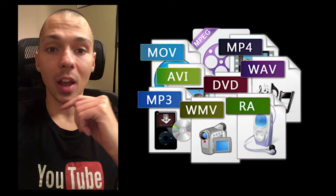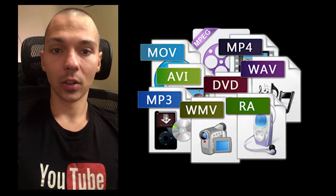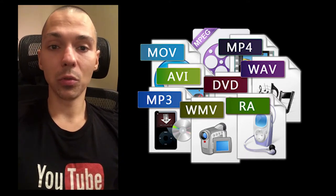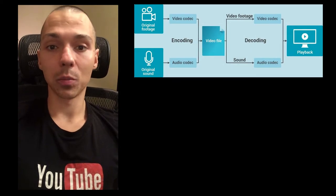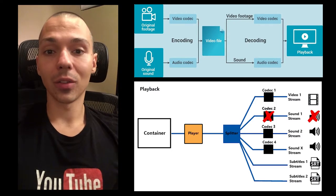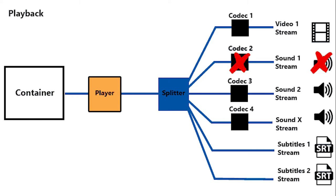Two important things to remember when converting video files: file formats and codecs. A file format is a type of container where the codec sits in. The codec is the type of compression used to reduce the file size. Applications use different file types and codecs based on the need and type of job they are doing. When we try to change the file type or codec type, it's because the target application simply doesn't support the file, so we need to convert it to use it.